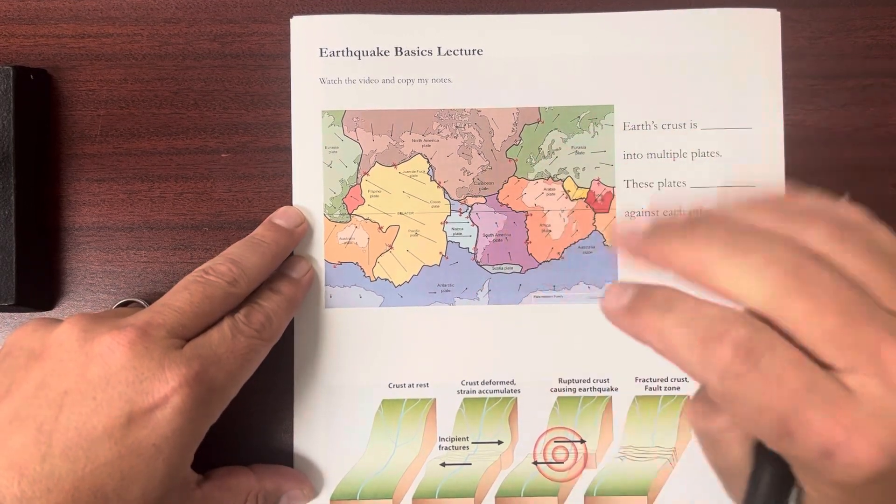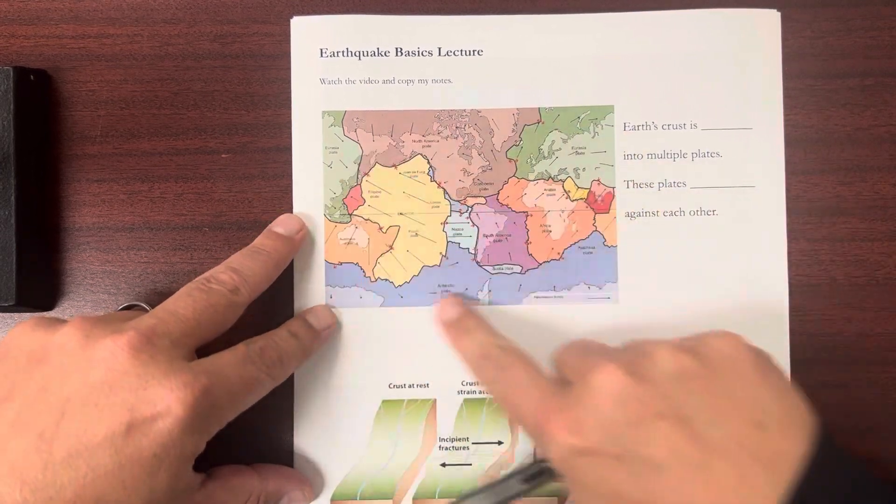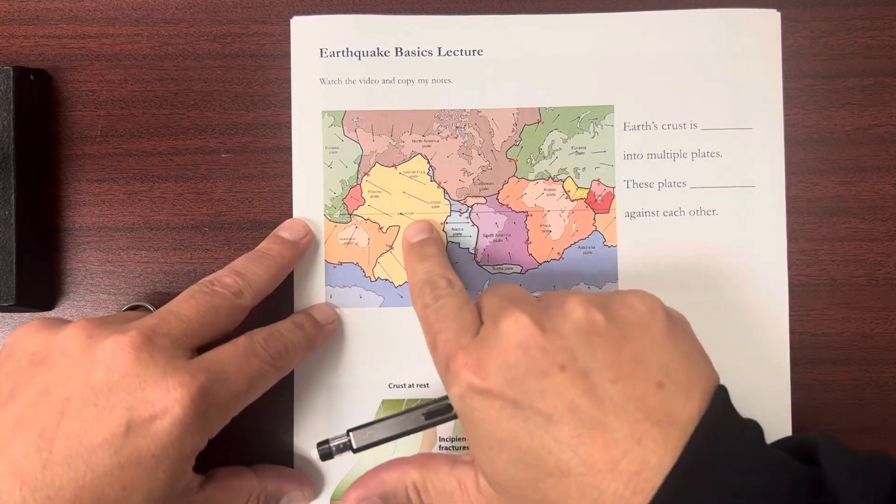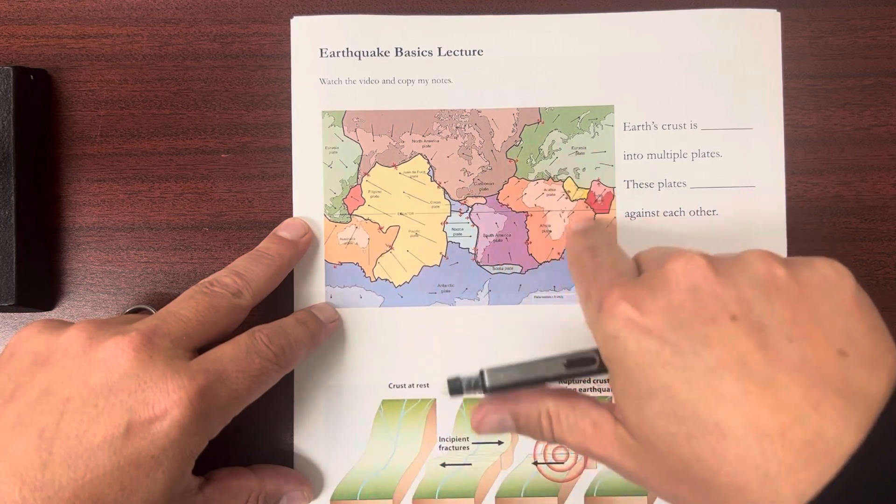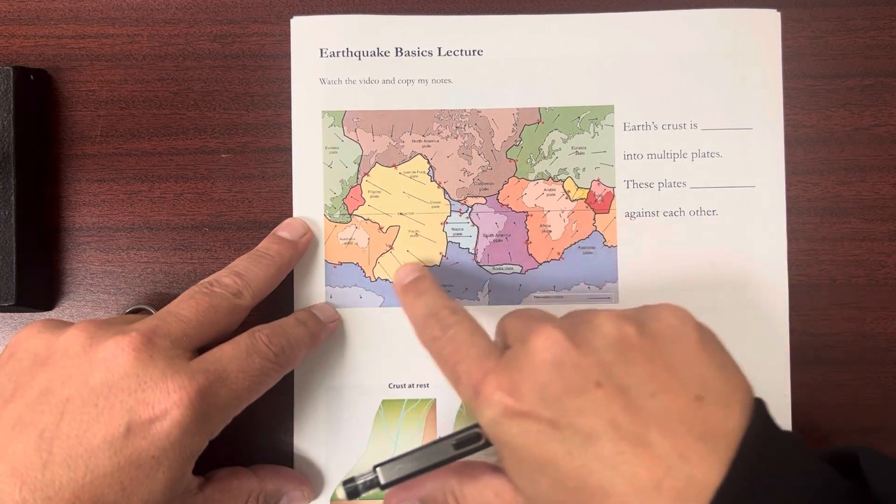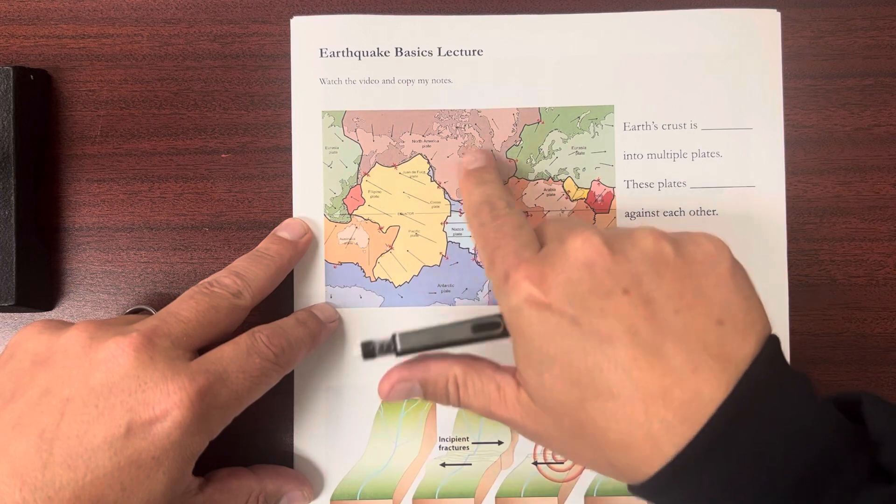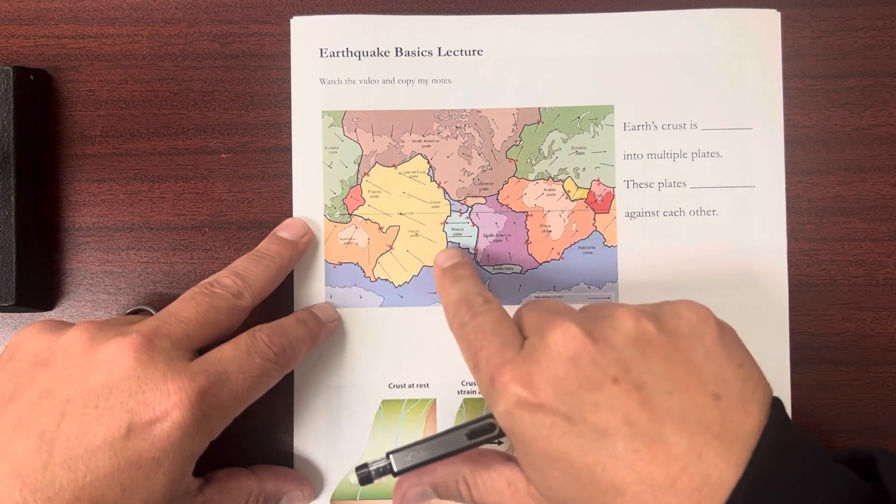We've talked a little bit about plate tectonics and this is the earth. It looks a little bit different because what you're seeing here are the large rock plates that make up the crust of the earth. And they're huge, you know, they're as big as continents or bigger in some cases.